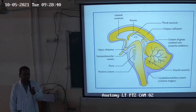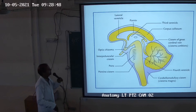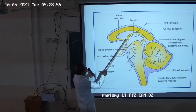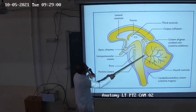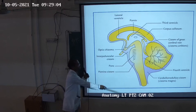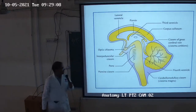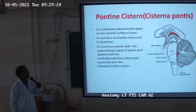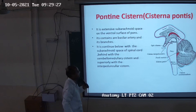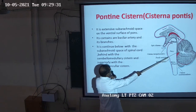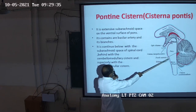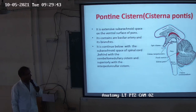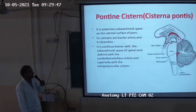The cerebellomedullary cistern is the main site for CSF collection. The lateral ventricle, third ventricle, foramen of Monro, cerebral aqueduct, fourth ventricle, pons and medulla oblongata, spinal cord, and midbrain are all visible in the diagram. The next cistern is the pontine cistern or cisterna pontis — present just anterior to the pons. This is an extensive subarachnoid space on the ventral surface of the pons containing the basilar artery, which is formed by the two vertebral arteries.